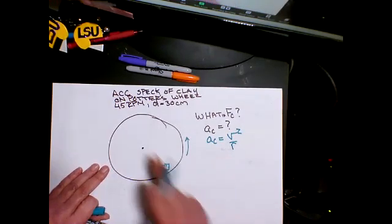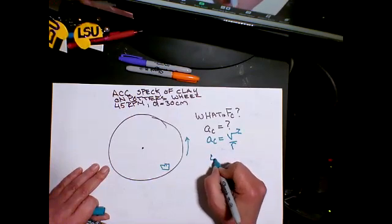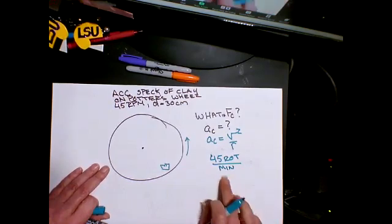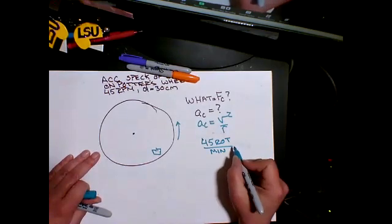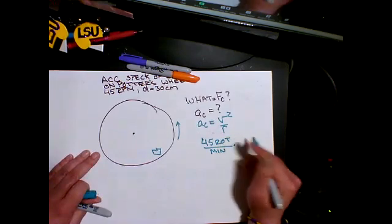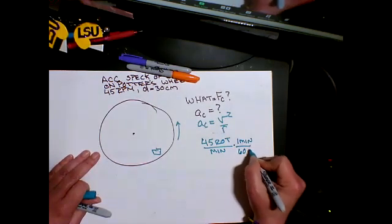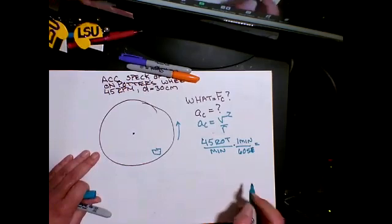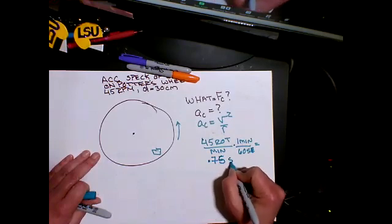What are we given? We're given rotations per minute. Let me remind you that is 45 rotations per minute. This is a frequency - time is on the bottom. Let's turn that into per second so we can use frequency per second. In one minute there's 60 seconds. This is 0.75 cycles in a second.